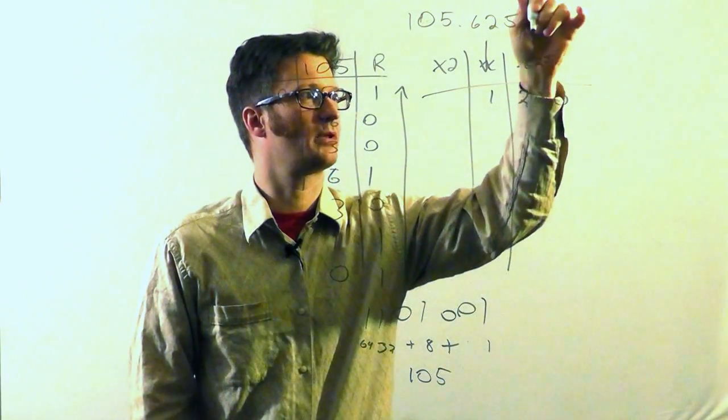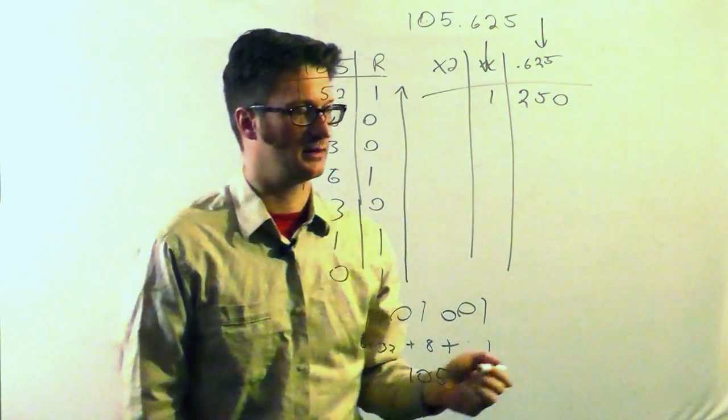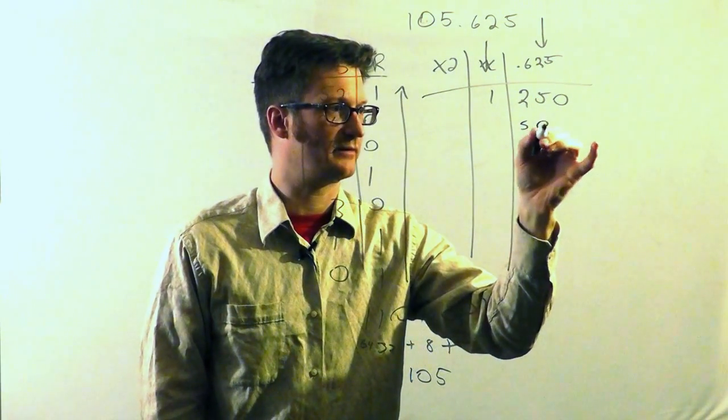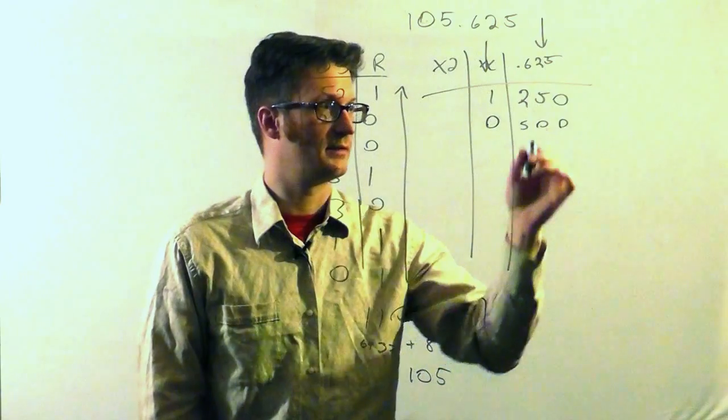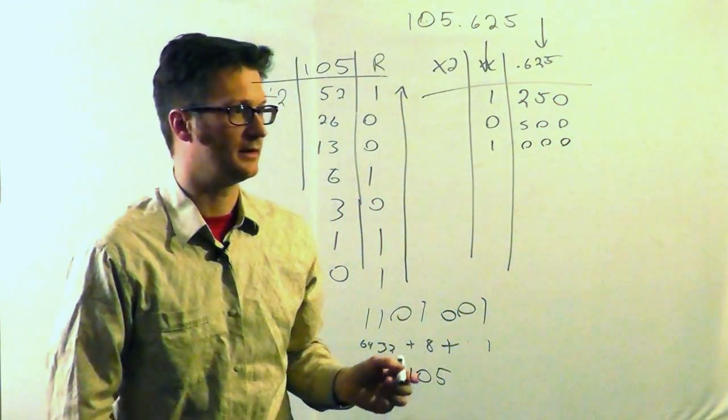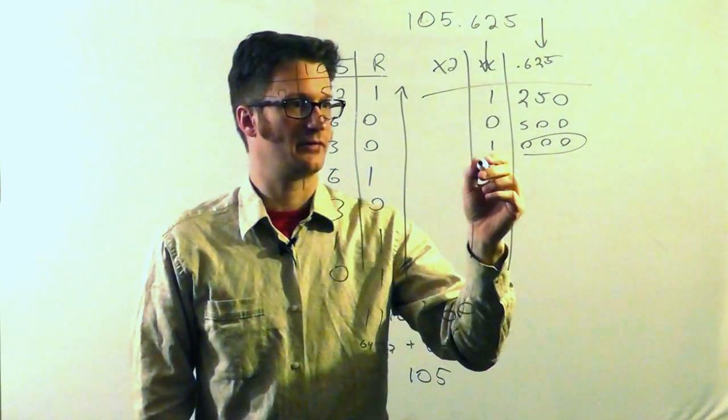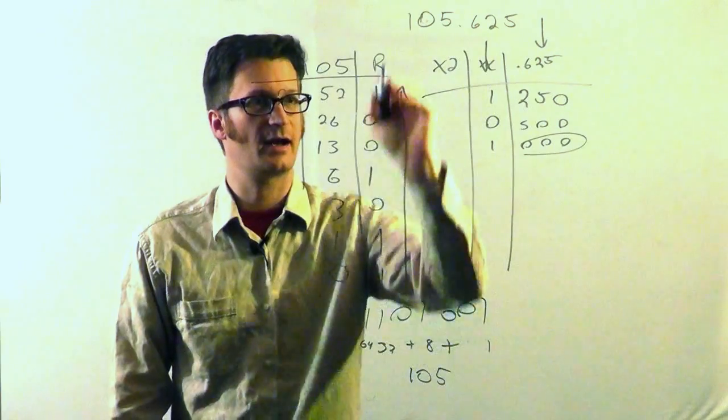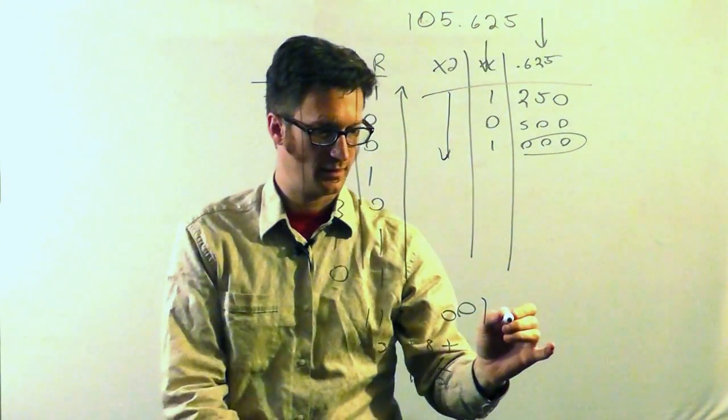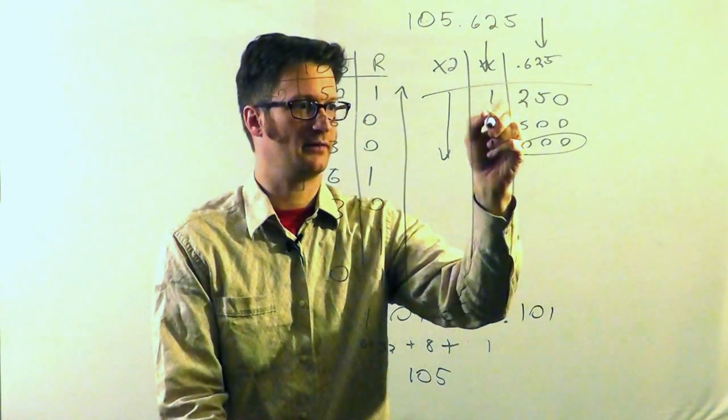In each case, we're only multiplying by this column right here. We're going to ignore the part that got rolled over into the answer. So 0.25 times 2 is 0.5, we get a 0 there. Times 2, 1. So now we're all done. We don't have anything else to do after we get all zeros. So in this case, instead of reading up like we did for the whole part, we're going to read downwards. So now our value is 0.101.